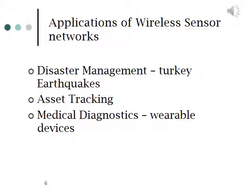In Turkey, wireless sensor networks are used for disaster management to detect earthquakes. Turkey is in a very earthquake-prone region, so wireless sensor networks are deployed across areas with a high probability of seismic activity. When an earthquake is about to start, these can sense it quite fast and send a signal very quickly to management offices to start evacuations.